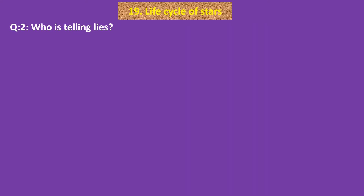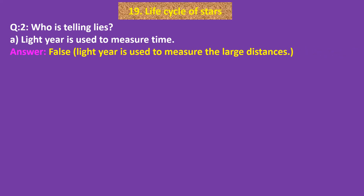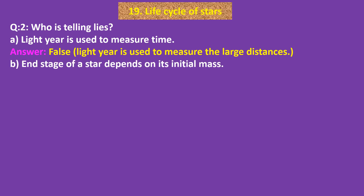Q2: Who is telling the truth? A. Light year is used to measure time. Answer: False. Light year is used to measure large distances. B. End stage of a star depends on its initial mass. Answer: True.